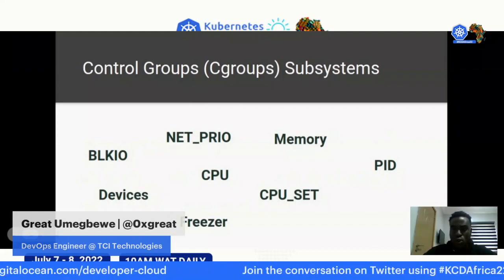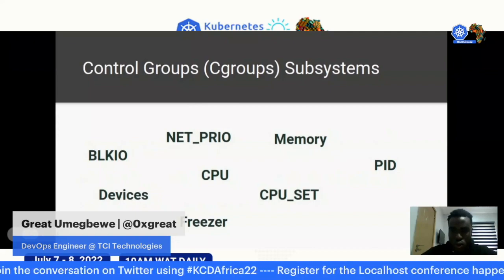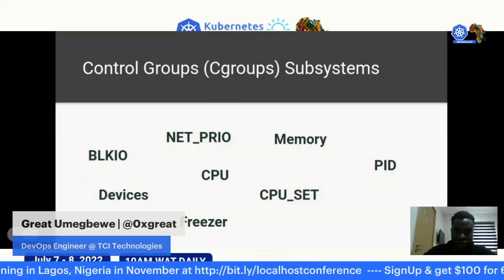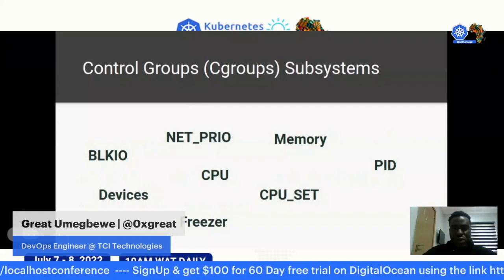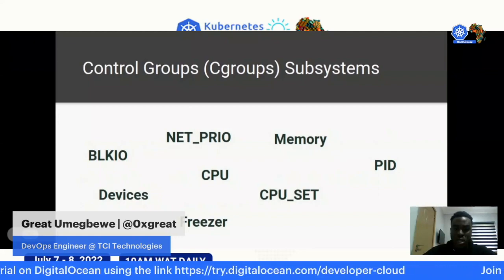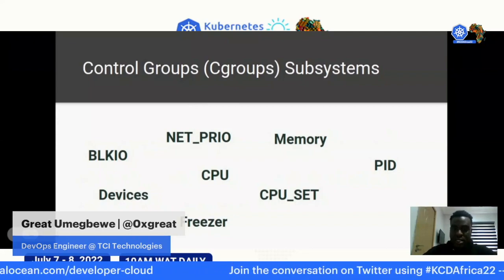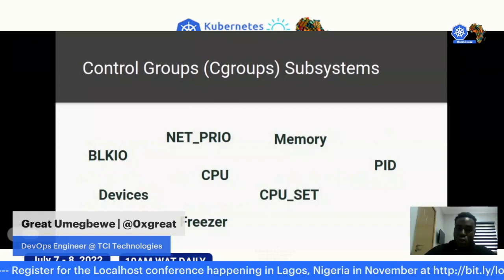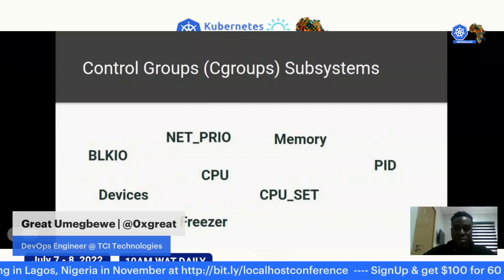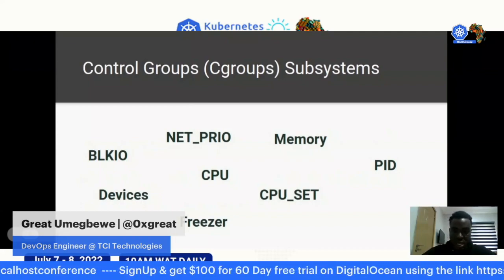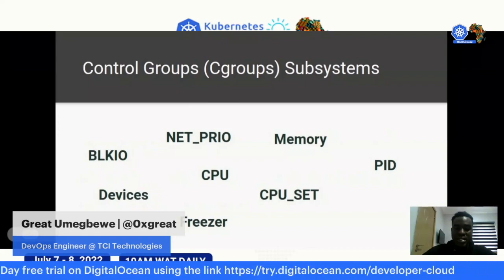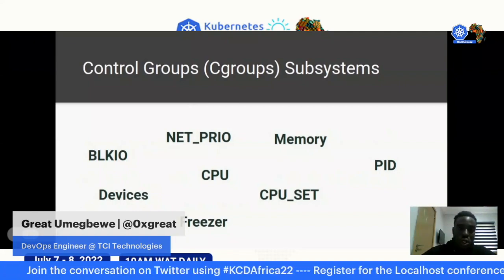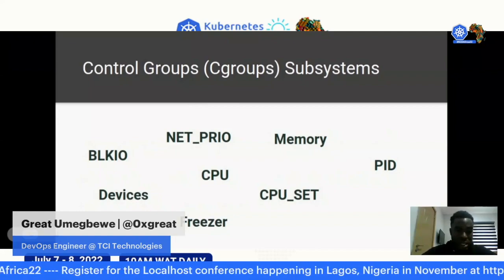Some cgroup subsystems include: memory, pid, CPU, cpusets, freezer, and blkio. Blkio sets limits to read and write from and to block devices. Net_cls allows you to mark network packets from a group. CPU uses the scheduler to provide access to processor resources. PID sets a limit on the number of processes in a group — so you can limit the number of processes that can run in a container.